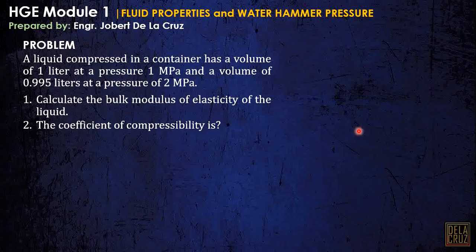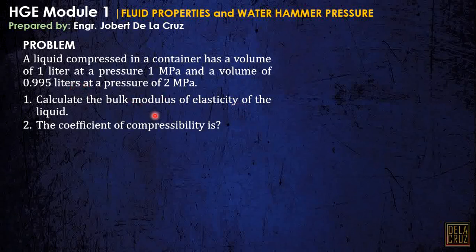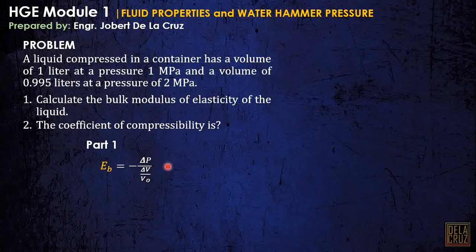For the water hammer pressure, we need to know the basic parameters of water hammer pressure — the bulk modulus of elasticity. We have a liquid compressed in a container with a volume of 1 liter at a pressure of 1 megapascal, and a volume of 0.995 liters at a pressure of 2 megapascals. We are required to calculate two problems. For number one, calculate the bulk modulus of elasticity: EB equals the change in pressure over the volumetric strain.